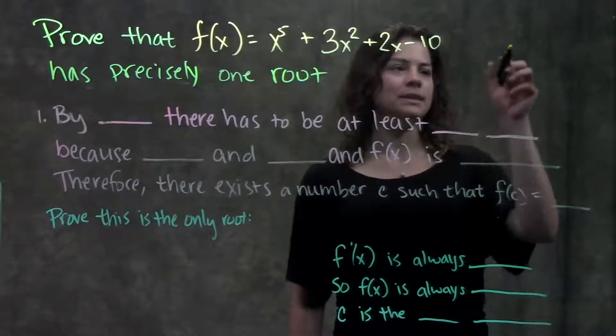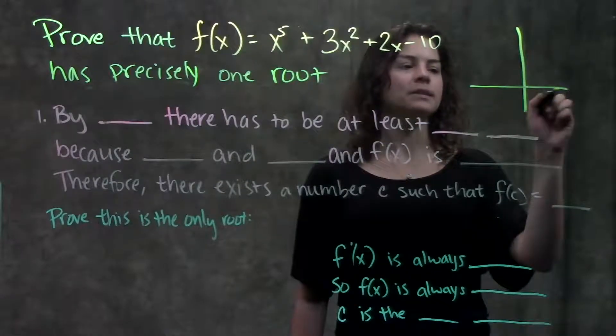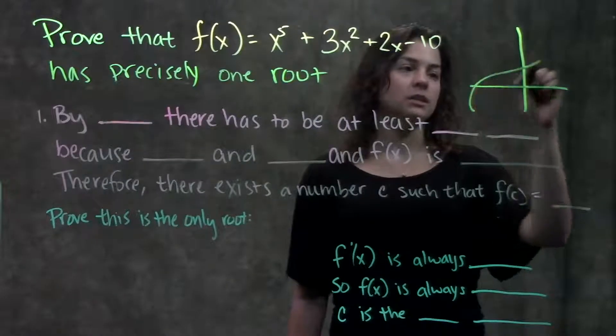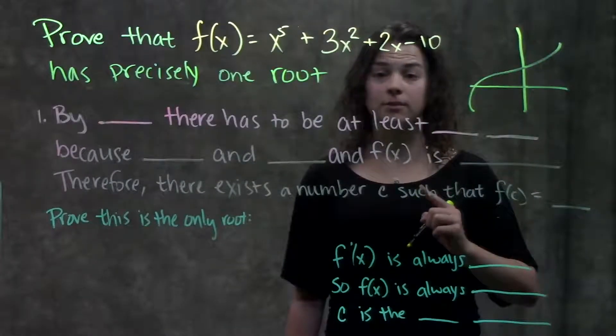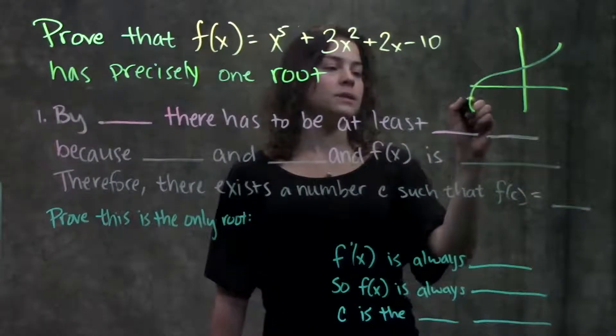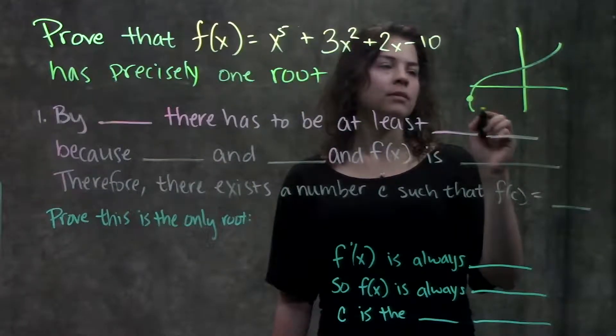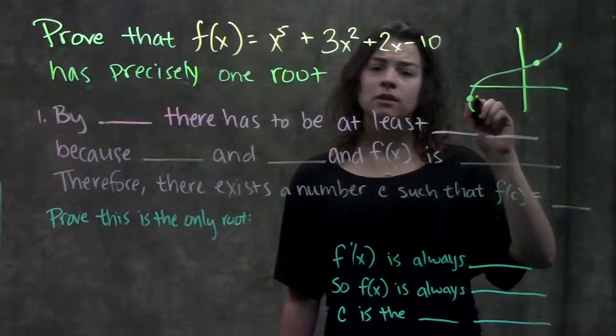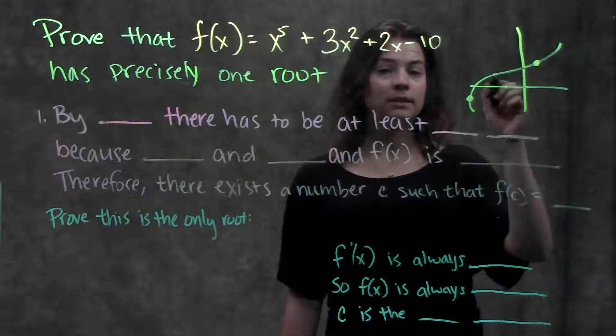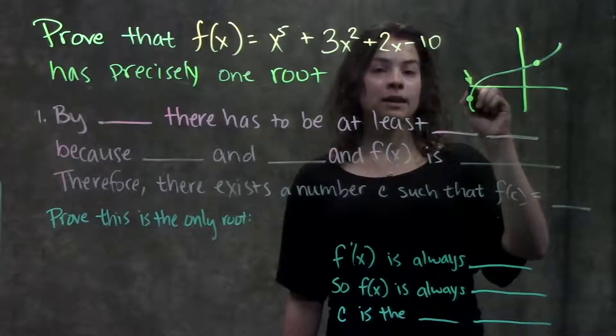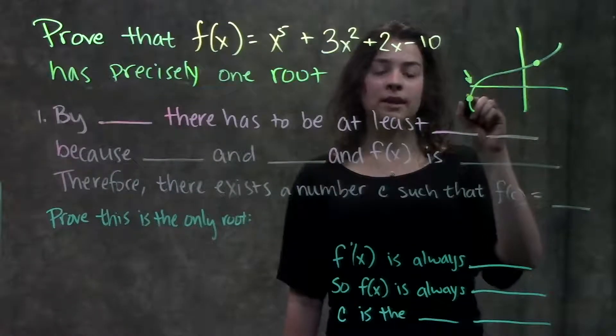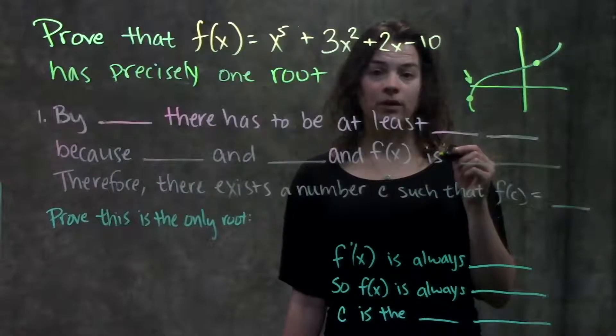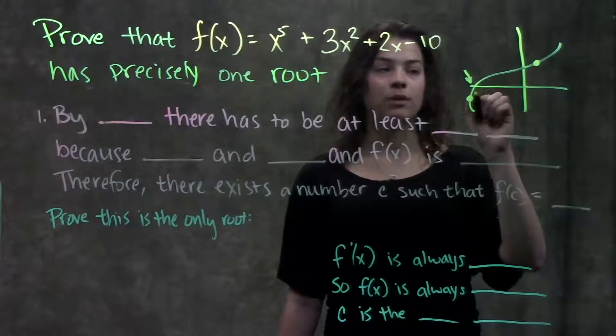If you remember how we did that and what intermediate value theorem says is that if we have some function and it's continuous, that has to be the first point—it's continuous—and there's some value over here that's negative, some value over here that's positive. We don't know what this middle section looks like, but we do know that since it's continuous there has to be at least one point where it crosses the x-axis. In other words, there has to be at least one root in this interval.